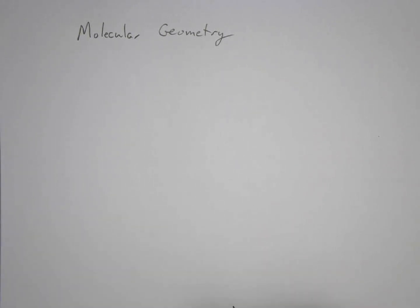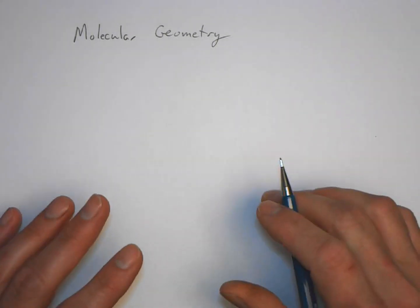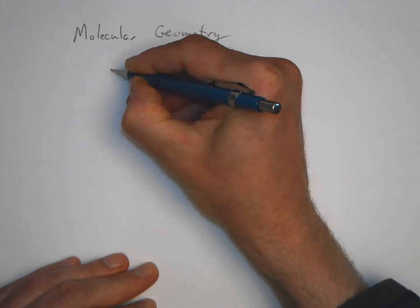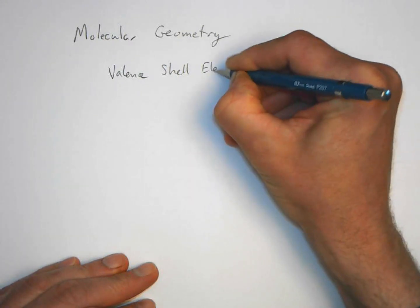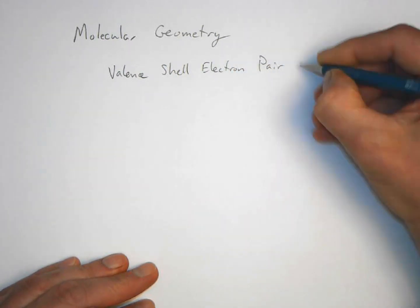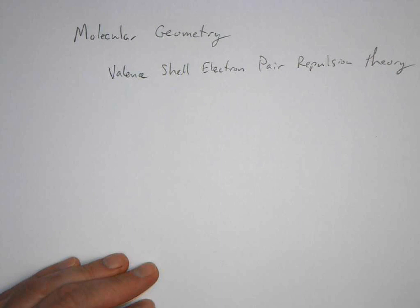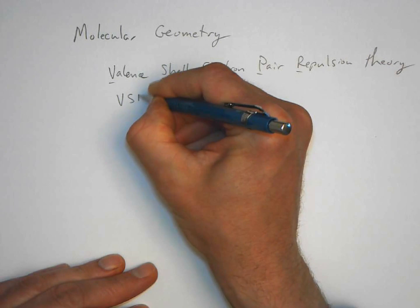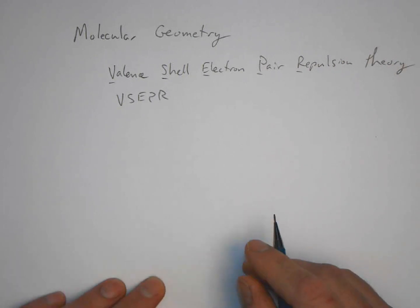This is the first of a series of lectures on molecular geometry. To predict the three-dimensional shape of molecules, we're going to use something called Valence Shell Electron Pair Repulsion theory, or VSEPR for short — sometimes called VESPER theory.